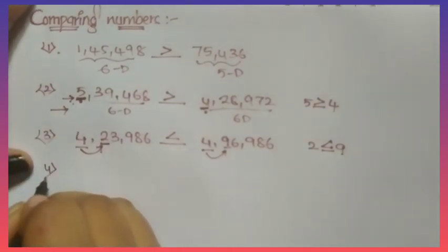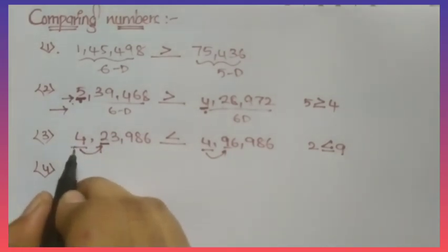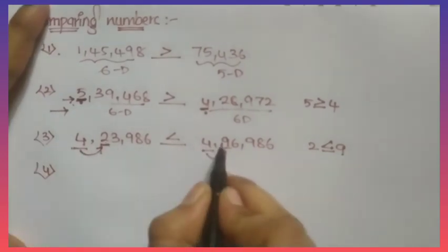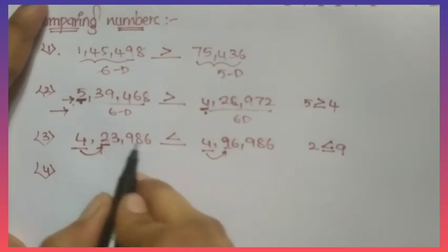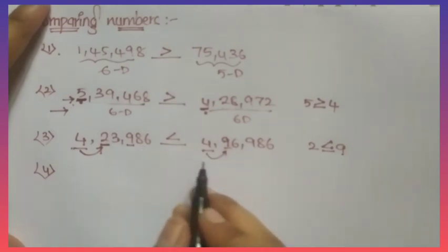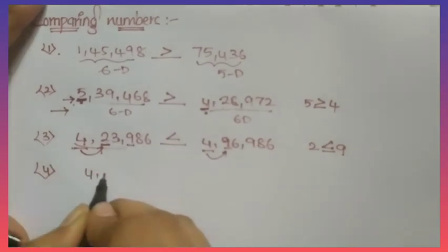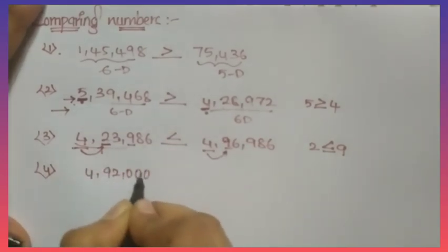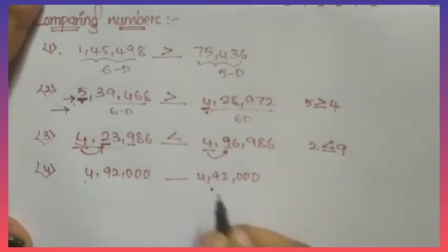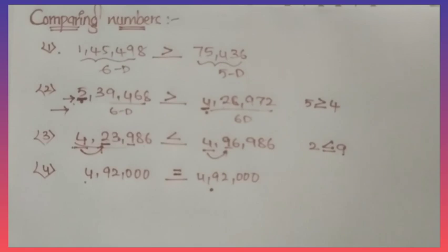This is how we compare numbers. First compare the lakhs place. If it is the same, compare ten-thousands. If that is also the same, compare thousands. If still the same, compare hundreds, then tens, then ones. If all digits are the same — for example, 4,92,000 and 4,92,000 — both have the same number of digits and the same digits, so we use the equal-to symbol.